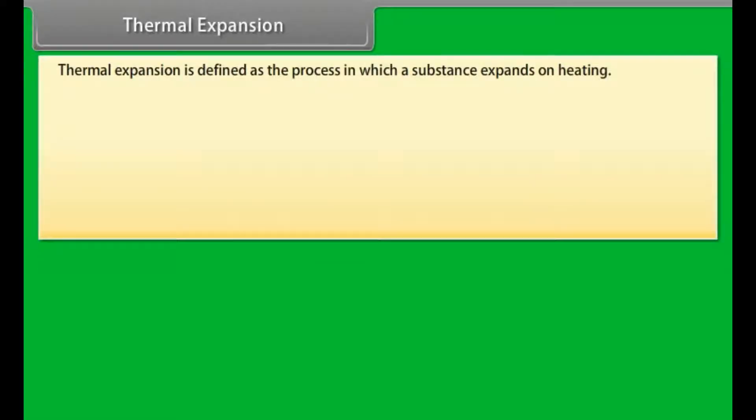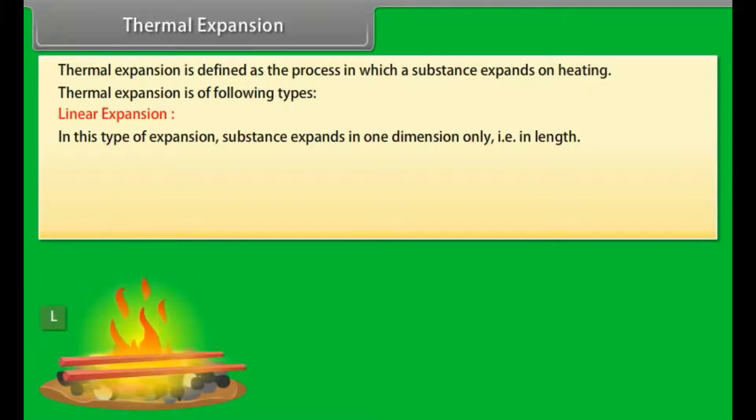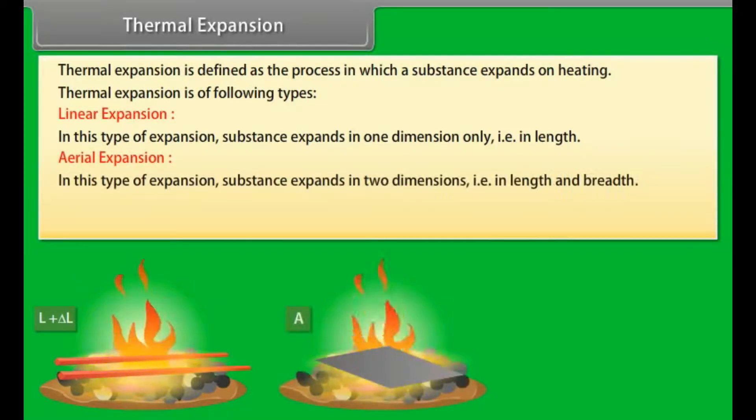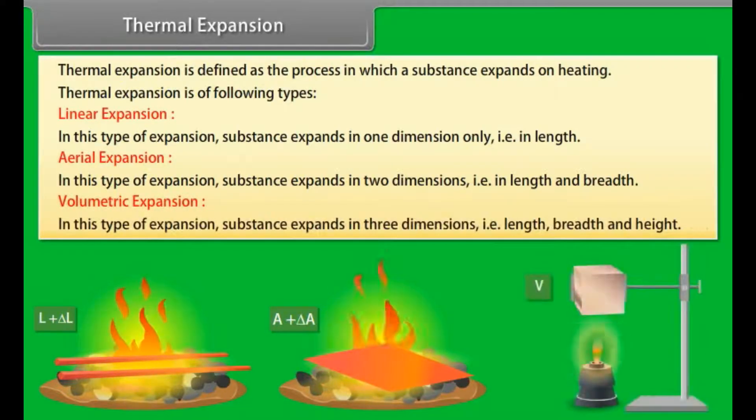Thermal expansion. Thermal expansion is defined as the process in which a substance expands on heating. Thermal expansion is of following types: Number 1, Linear expansion - in this type of expansion, substance expands in one dimension only, that is in length. Number 2, Aerial expansion - in this type of expansion, substance expands in two dimensions, that is in length and breadth. Number 3, Volumetric expansion - in this type of expansion, substance expands in three dimensions, that is in length, breadth and height.